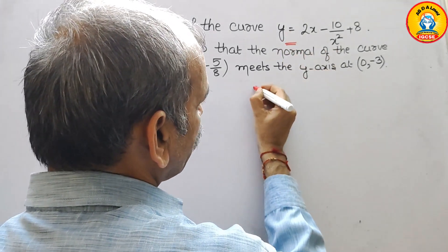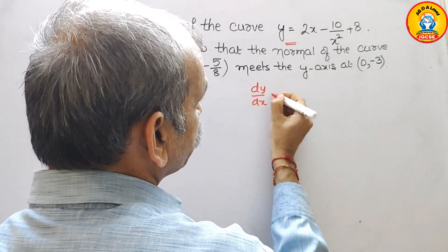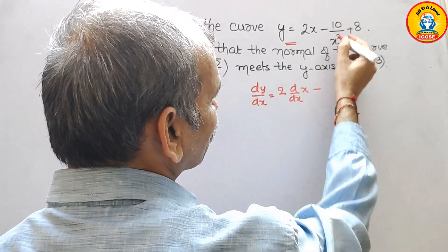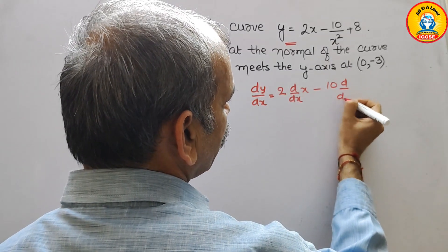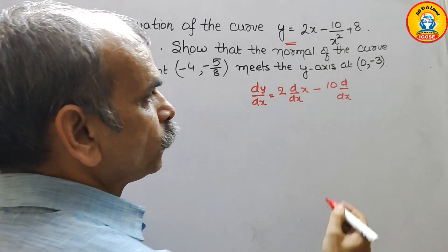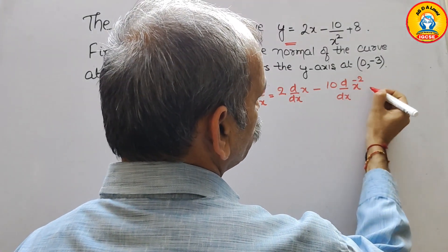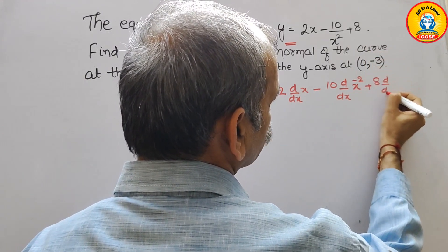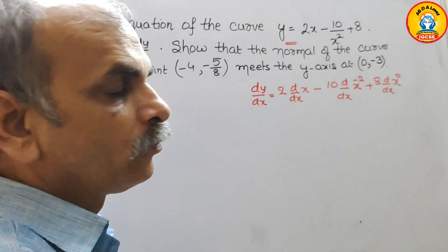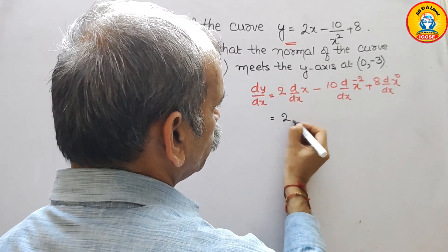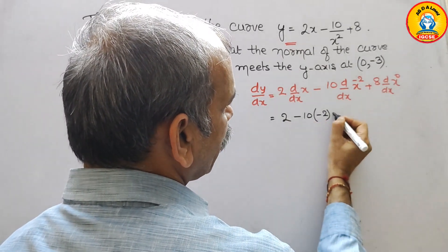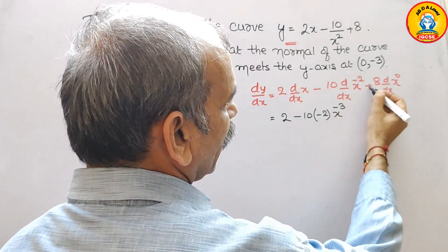If you differentiate this, you will get dy by dx. That is equal to 2 d by dx of x minus 10. Here comes d by dx of x squared. If you bring it upside, it will be x to the power of minus 2. So here comes x to the power of minus 2, plus 8 d by dx of x to the power of 0. Now if you differentiate this, we will get 2, and here comes minus 10 into minus 2 and x to the power of minus 3, and this will become 0.